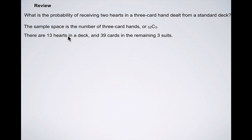There are 13 hearts in a deck and 39 cards remaining in the three suits. So two of these are going to be hearts, and one of them is going to be one of the other 39. So the number of ways that this can happen is going to be 13 choose 2, which is the number of ways that we can deal two hearts, times 39 choose 1, which is the number of ways that we could have one of the 39 cards from the other suits.